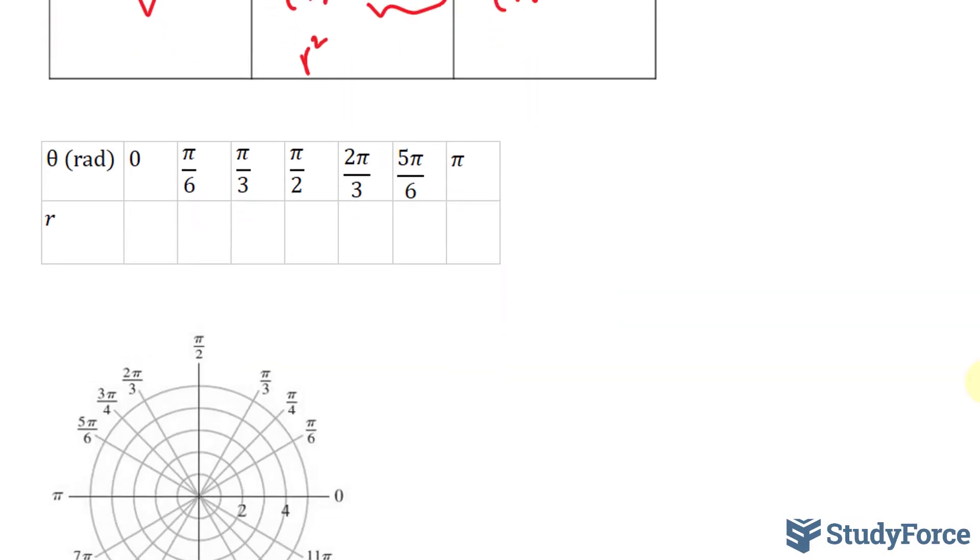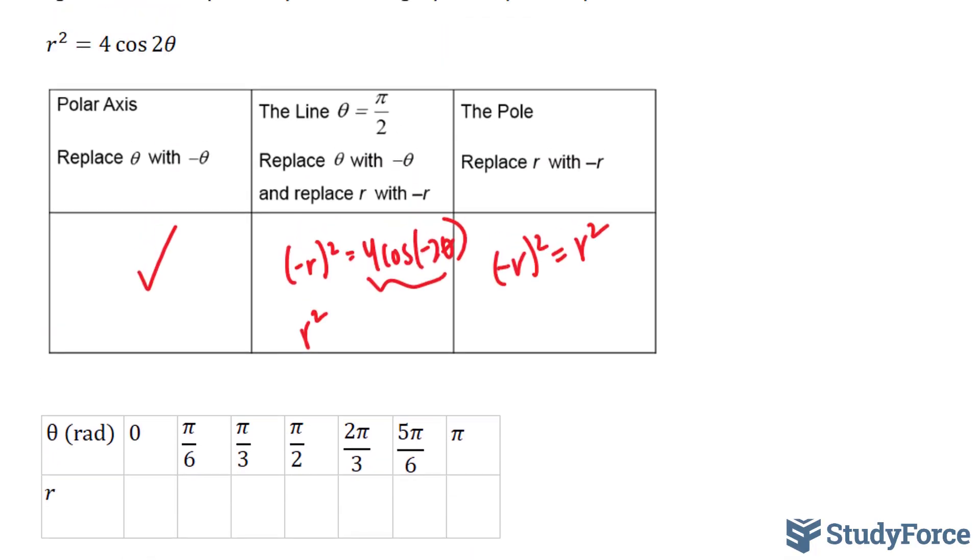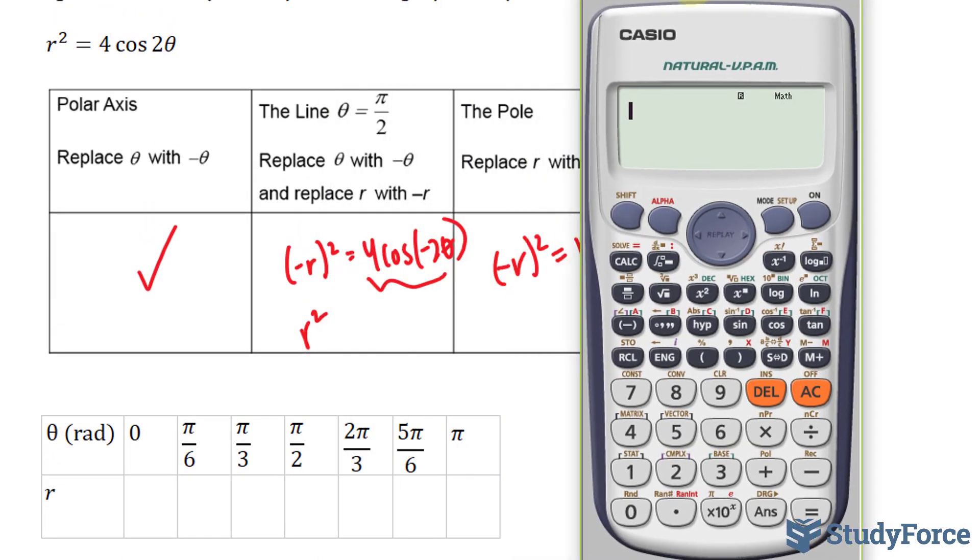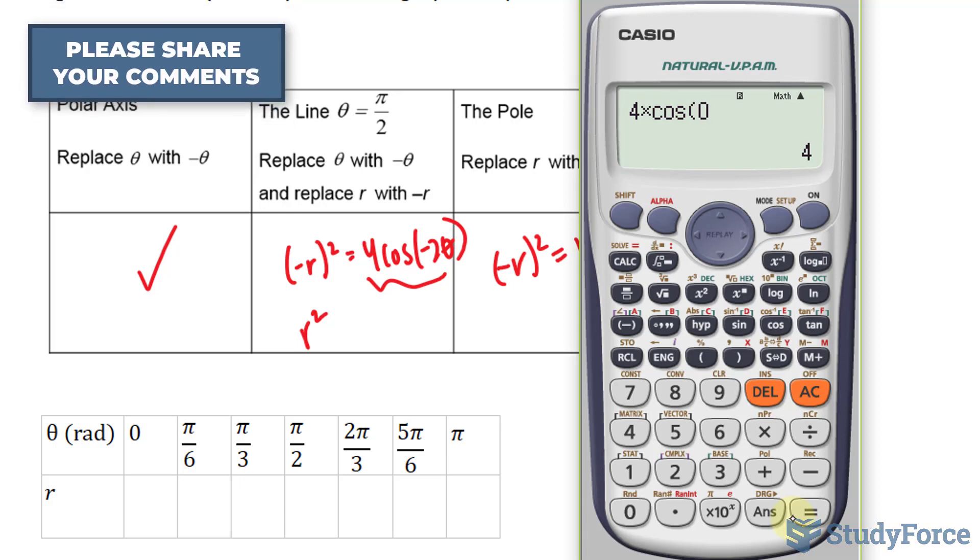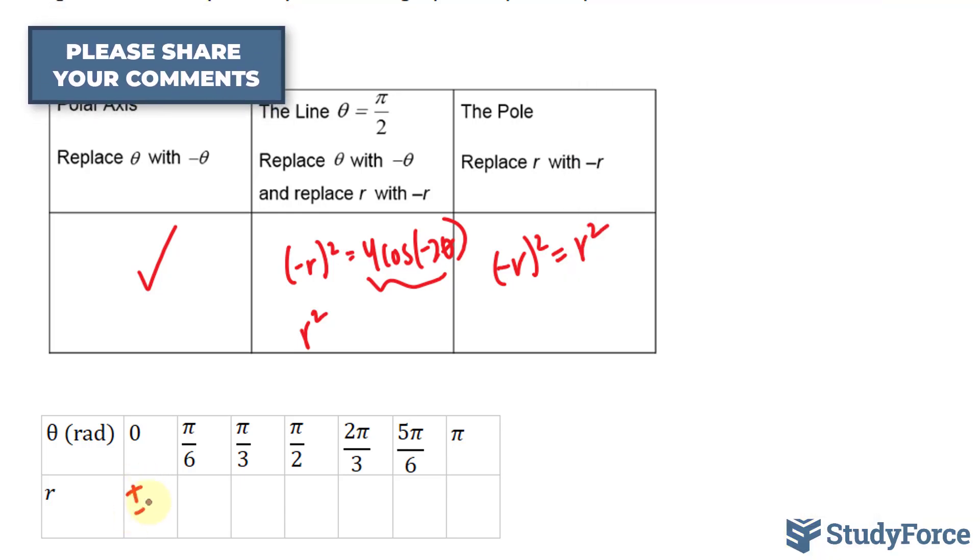That being said, let's go ahead and fill in this table. If I replace 0 into my equation, and make sure that your calculator is in radians, I have 4 times cosine 2 times 0. You end up with 4. Now you have r squared equals 4, square rooting both sides, you get plus minus 2.